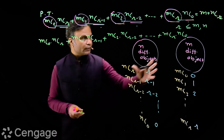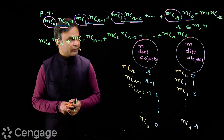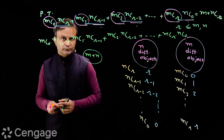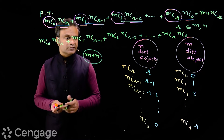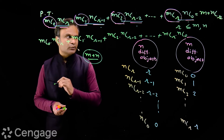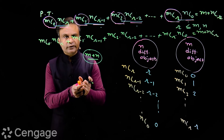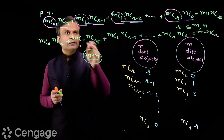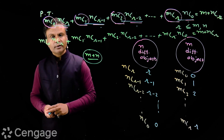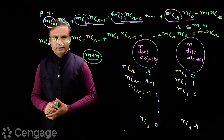Another way of calculating the number of ways is to merge these two groups. Then there will be m+n objects in one group, and all these m+n objects are distinct. Now we have to select r objects from these m+n objects, so the number of ways of selection is m+nCr. We equate these two counts, and we have the sum of this series as m+nCr. In permutation and combination, we often create such situations to find the sum of this type of series.